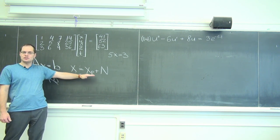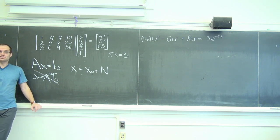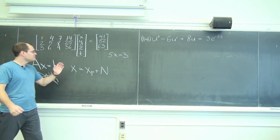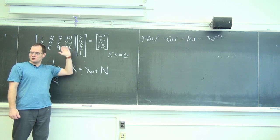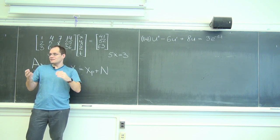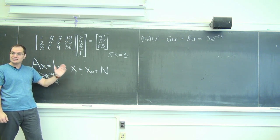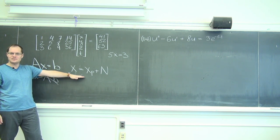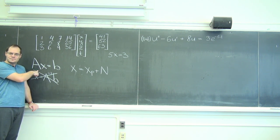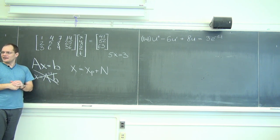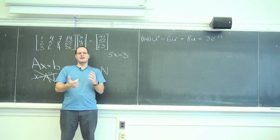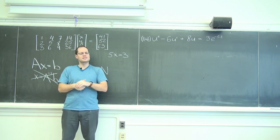Let me now prove that this expression captures all possible solutions — that's why I call it the general solution. There are good proofs and bad proofs. Good proofs: when you learn them, you say to yourself, 'my goodness, I just learned something.' This is a proof that students need. We must go in two directions, both equally simple: prove that anything of the form particular-plus-null-space is a solution, and prove that any solution can be written in that form.